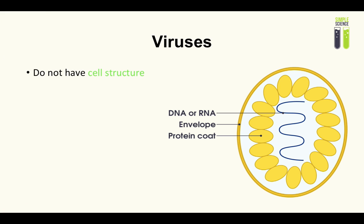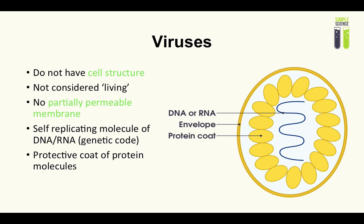Let's quickly check out viruses. Viruses aren't really considered living things, so they weren't in the cell chart because they do not carry out the seven life processes — the MRS NERG concept. They do not have a cell structure, and more importantly, they do not have a partially permeable membrane. Viruses work by taking over a host cell and using its ribosomes to create more of themselves. Therefore, they can't replicate unless they're inside a host cell, which is one of the reasons they're not considered living.